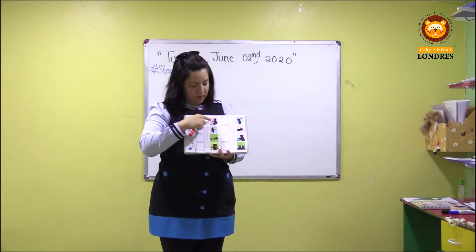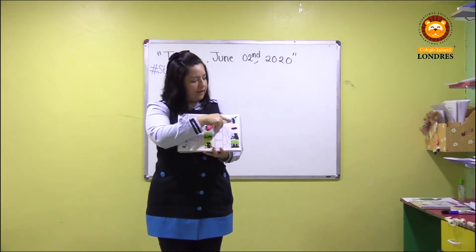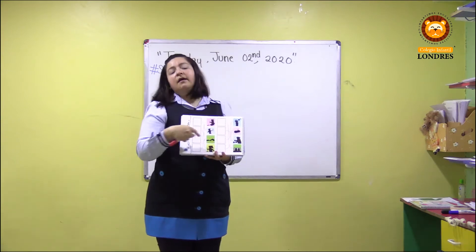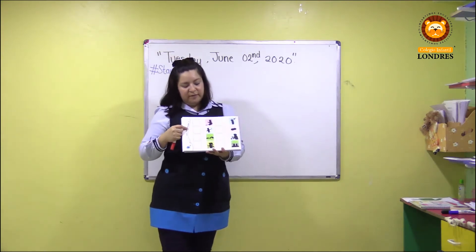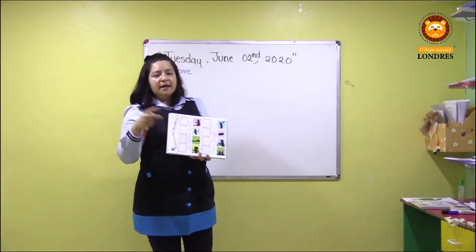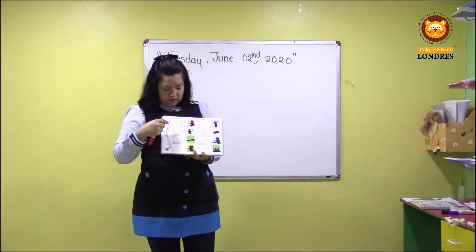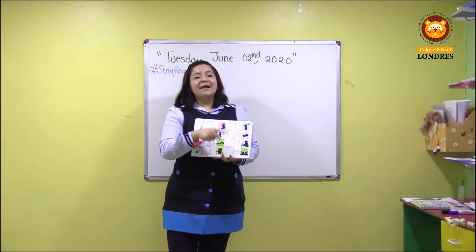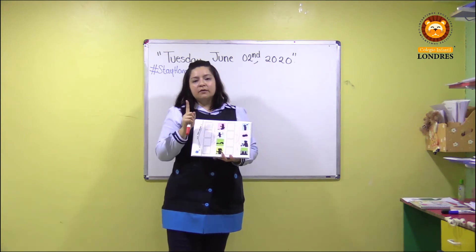That is one, two, three, four, five, six, seven, eight. Eight different persons. Tenemos ocho diferentes personas realizando diferentes actividades, ¿vale? Entonces, en el recuadro que está aquí, ustedes van a colocar el sticker que corresponde.